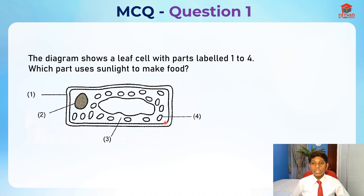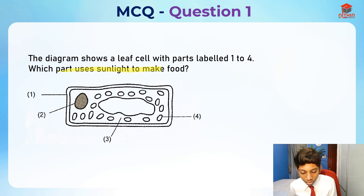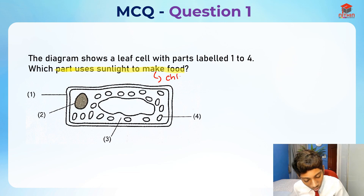This is Question 1, so let's read the question first. The diagram shows a leaf cell with parts labelled 1 to 4. Which part uses sunlight to make food? Even without looking at the diagram, we should be able to tell that the part that uses sunlight to make food is the chloroplasts.